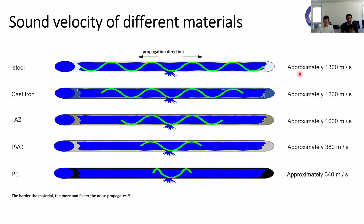The sound velocity is already stored inside the correlator program, so you don't need to worry about it. You only need to tell the correlator the pipe material and dimension, and the correlator will show you the correct sound velocity in the table.